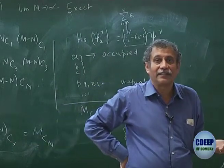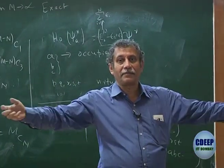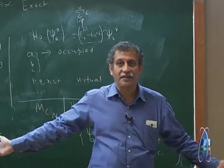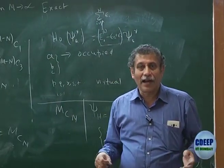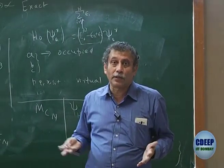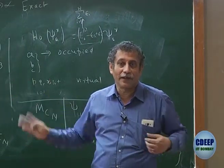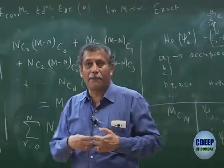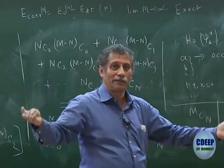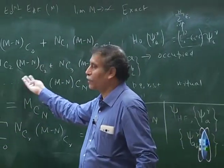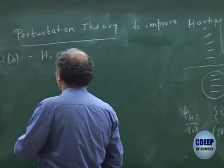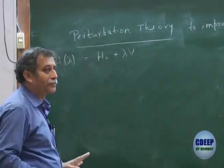MCN determinants complete the full space — there is nothing else. All those determinants are eigensolutions, but only in this M basis. If M becomes larger, more solutions will come out. So the perturbation theory starts with this imaginary Hamiltonian. When I have been able to separate a dominant H₀, you can very easily see that if λ = 0, this fictitious Hamiltonian becomes the same as the zeroth-order Hamiltonian.